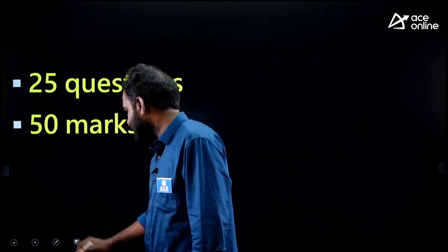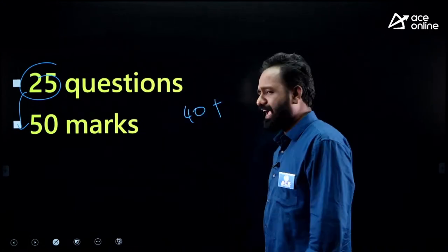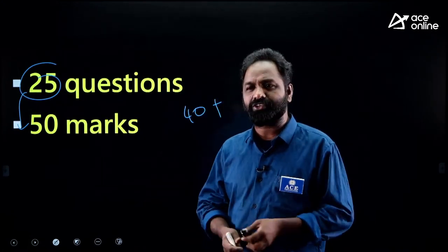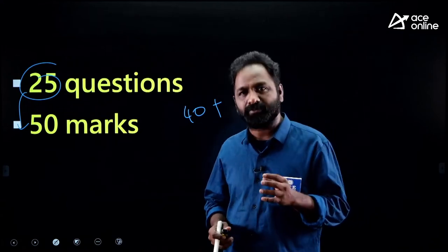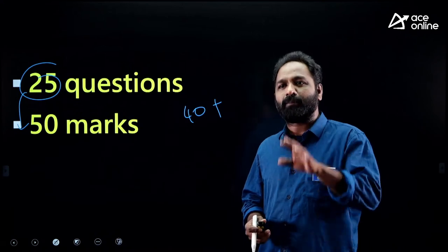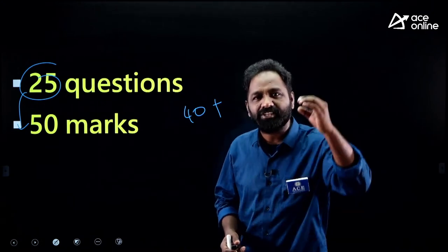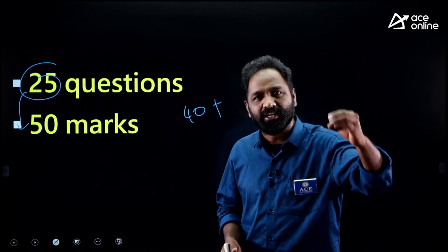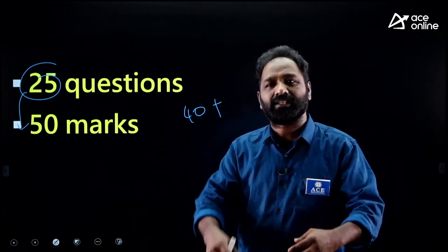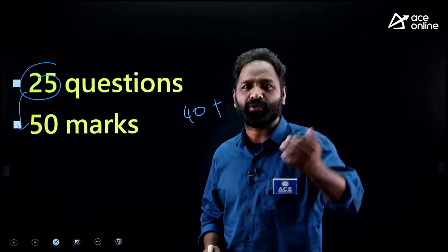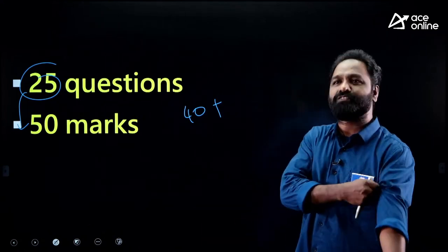In General Awareness for SSC CGL Tier 1, there are 25 questions and 50 marks. I said how to get 40 marks — I'm not going to do any magic. I'm a completely practical person, student-oriented only. In this video you can expect a subject-wise breakdown — History, Geography, Polity, and others — covering important topics, how questions are framed, and where to focus.